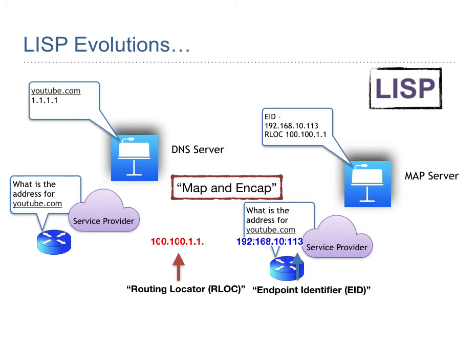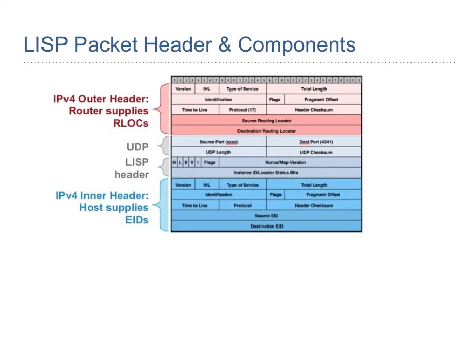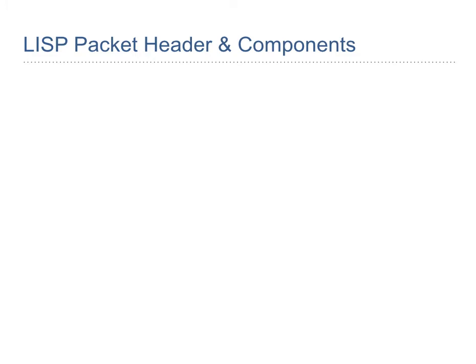The next slide covers the LISP packet header and components. It's straightforward — the outer red header identifies the source and destination of the route (RLOCs), while the inner blue header identifies the actual source and destination host (EIDs). For more detail on the LISP header format you can check out the IETF standards and related URLs.